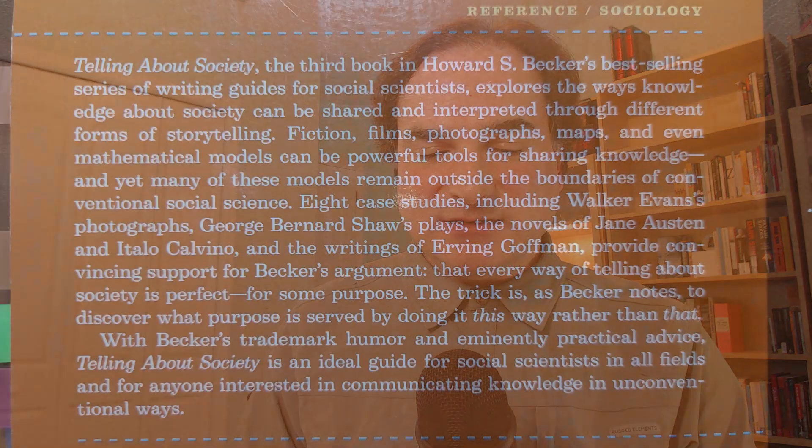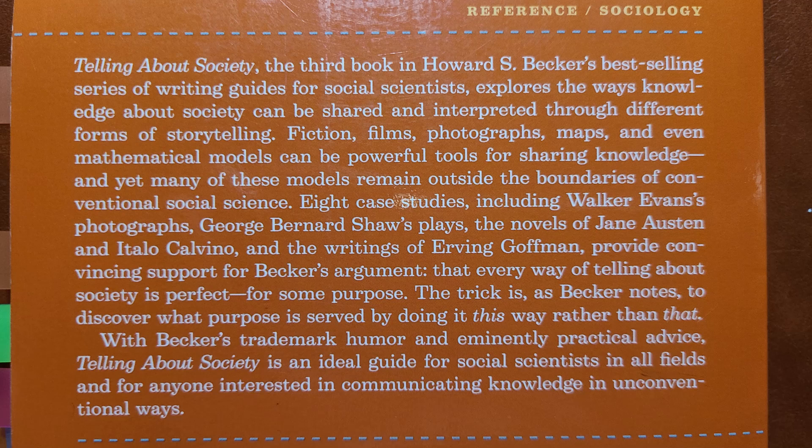Here's why — I'm going to read a little bit from the back of the book. 'Telling About Society, the third book in Howard S. Becker's best-selling series of writing guides for social scientists, explores the ways knowledge about society can be shared and interpreted through different forms of storytelling. Fiction, films, photographs, maps, and even mathematical models can be powerful tools for sharing knowledge, and yet many of these models remain outside the boundaries of conventional social science.' What the book goes into is how the different storytelling models that exist in our culture but that we don't necessarily associate with sociological work can be used for that work.